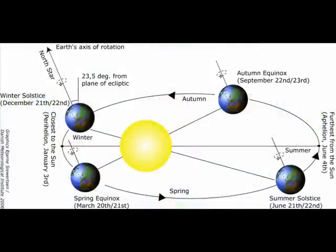As the earth makes its yearly elliptical orbit around the sun, it travels close to the sun on two occasions, in spring and fall. These two seasons, in late March and late September, are marked by equinoxes. An equinox, by definition, occurs when day and night are equal lengths — 12 hours each.